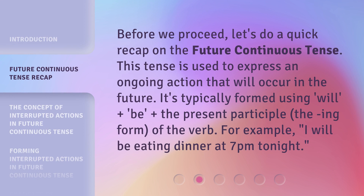Before we proceed, let's do a quick recap on the future continuous tense. This tense is used to express an ongoing action that will occur in the future. It's typically formed using 'will' plus 'be' plus the present participle — the '-ing' form of the verb. For example: 'I will be eating dinner at 7 p.m. tonight.'